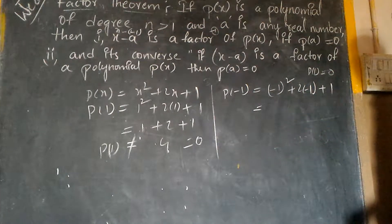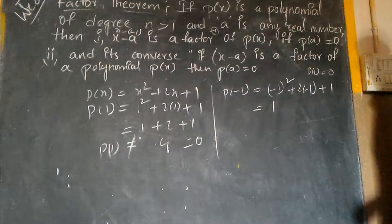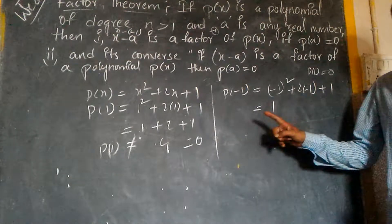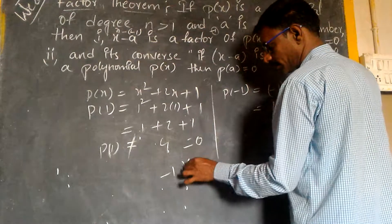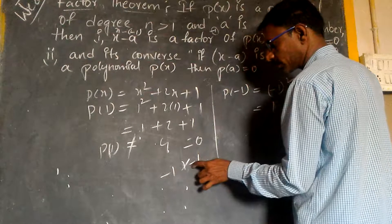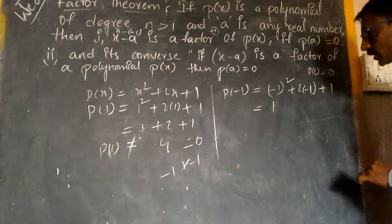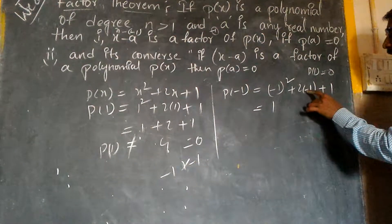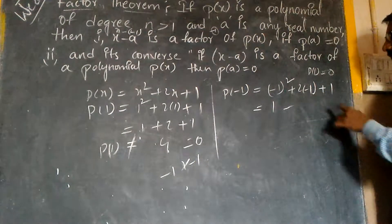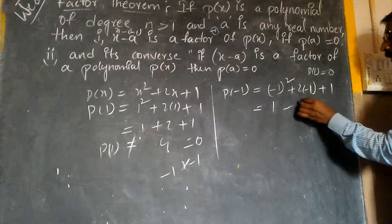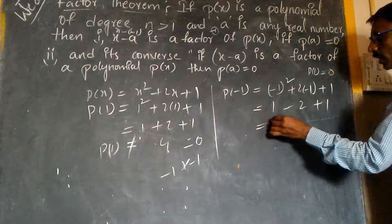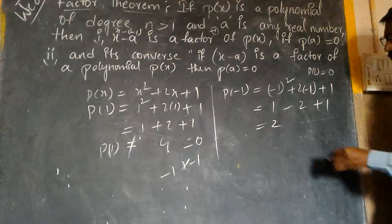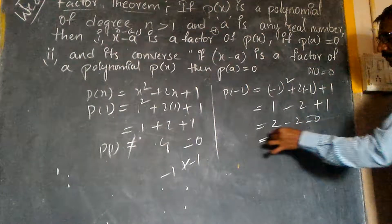Minus 1 whole square is nothing but positive 1, because minus 1 into minus 1 gives plus 1. Then plus 2 into minus 1 gives minus 2. So we have 1 minus 2 plus 1. That is 2 minus 2, which equals 0.